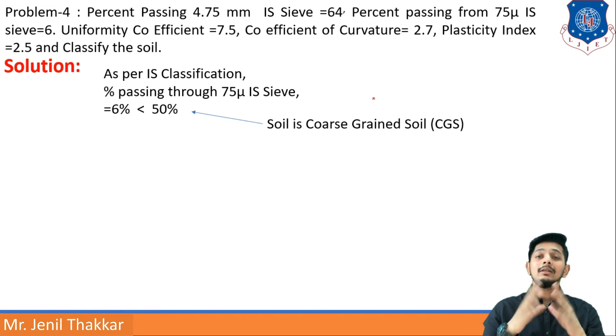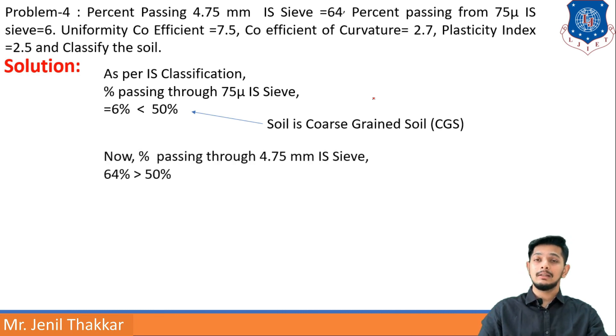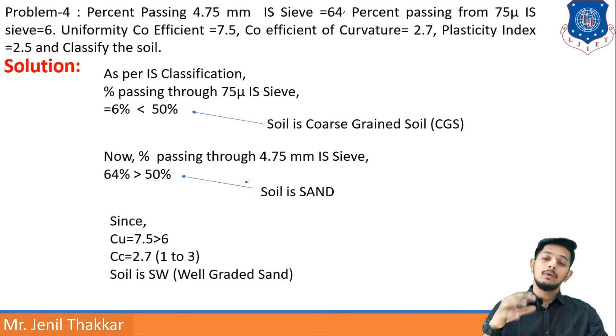Furthermore in CGS, percentage passing through 4.75 mm IS sieve that is 64, that is greater than 50, so it comes on top table or we can say soil is sand. Now if it is sand and having value CU is greater than 6, that is 7.5.